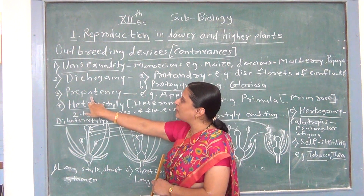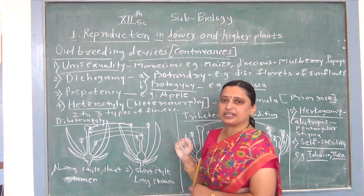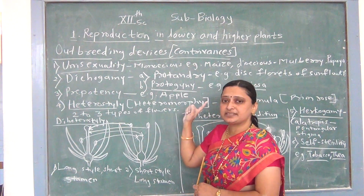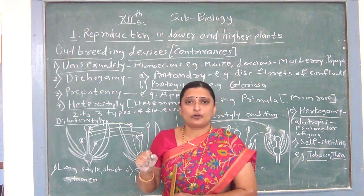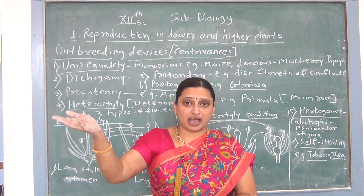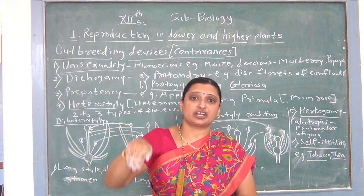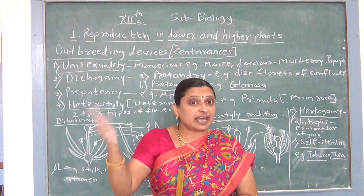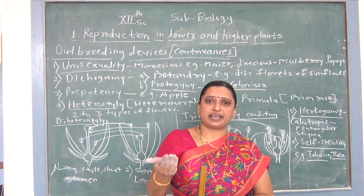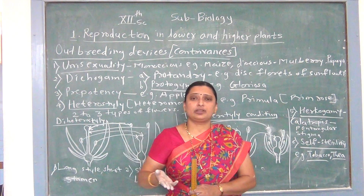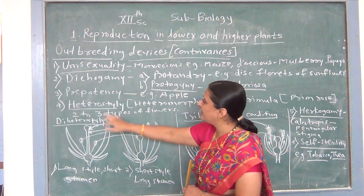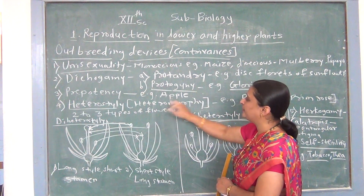The third device of outbreeding devices is prepotency. Prepotency is a special device seen in plants such as the apple flower. In prepotency, the pollen grains of another flower germinate more readily on the stigma rather than the pollen grains of the same flower. This is the condition of prepotency.